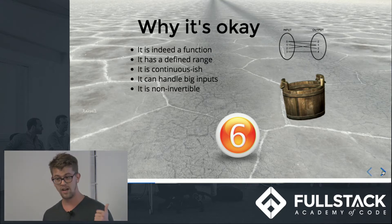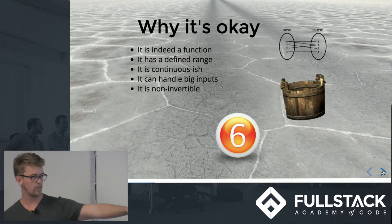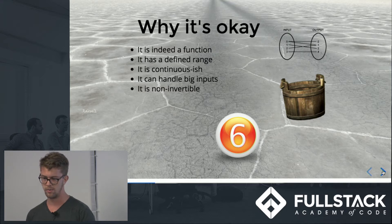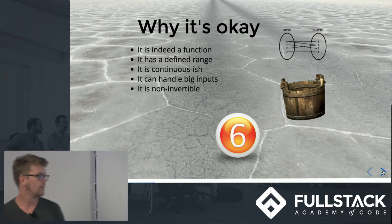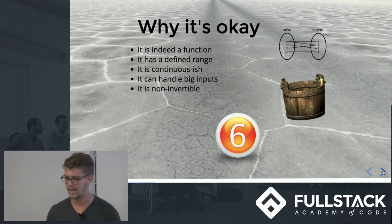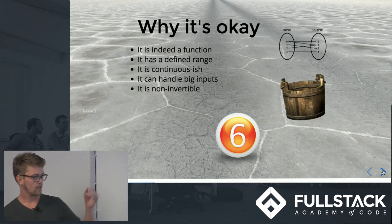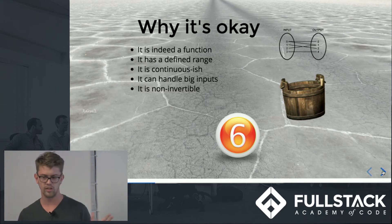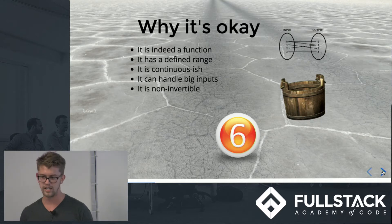It is not invertible. We have the number six as the output of our hash. Does anyone remember what our input was? 'Mary had a little lamb.' Is there any way to know that just from the output of six? No. In fact, based on that hash function, basically infinite inputs could also give us a hash of six. If I were clever, I could probably get the entire works of Shakespeare to hash out to six.